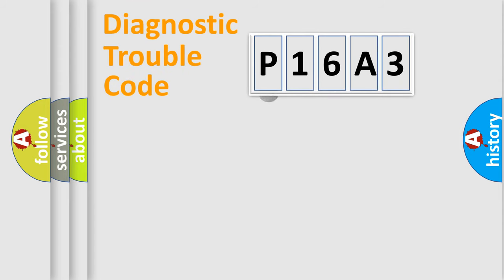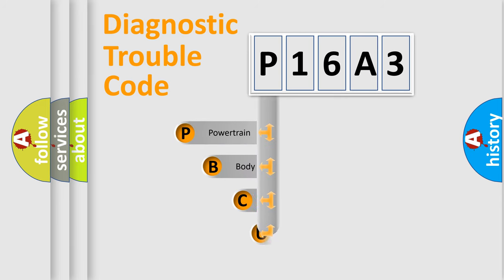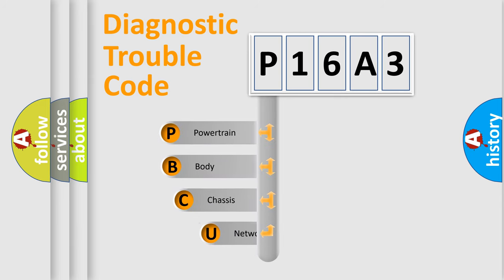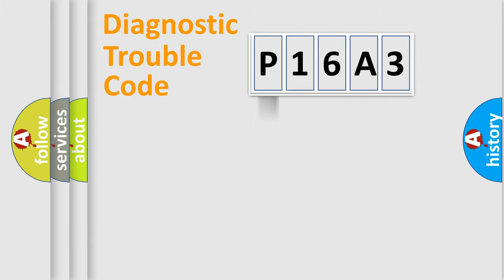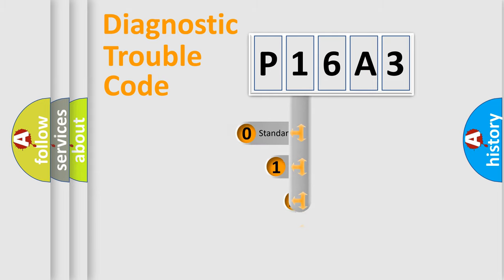First, let's look at the history of diagnostic fault code composition according to the OBD2 protocol. We divide the electric system of an automobile into four basic units: powertrain, body, chassis, and network. This distribution is defined in the first character of the code.